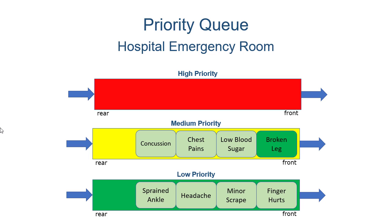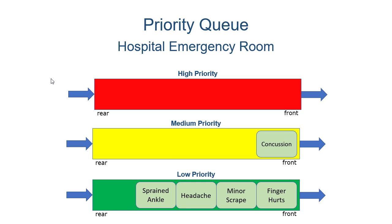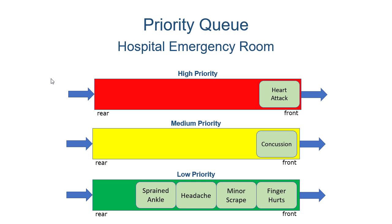So now there's nothing high priority, so the doctor comes around — here's this broken leg that you can handle. Broken leg gets handled, then we handle the low blood sugar and the chest pains. After all of those are handled, this is what our queue looks like: nothing high priority, only one medium priority thing. This person with a concussion is going to get treated relatively soon. However, then someone comes in with a heart attack. Since they have a high priority, the heart attack is going to get treated first, even though the concussion was there first. The priority supersedes the arrival order. So the heart attack gets handled, and then we would go on and treat the concussion.